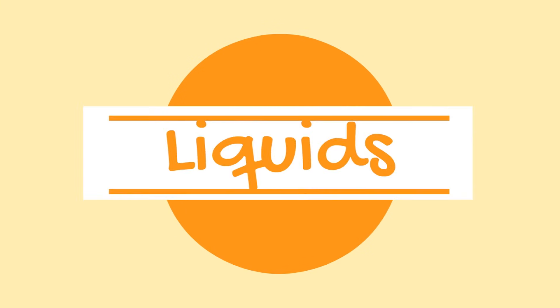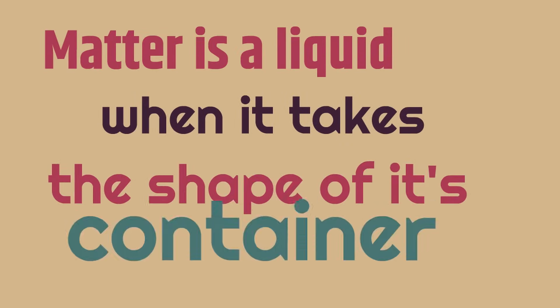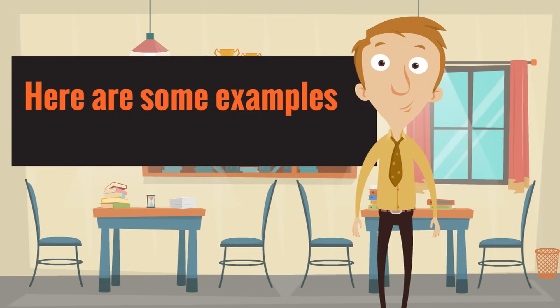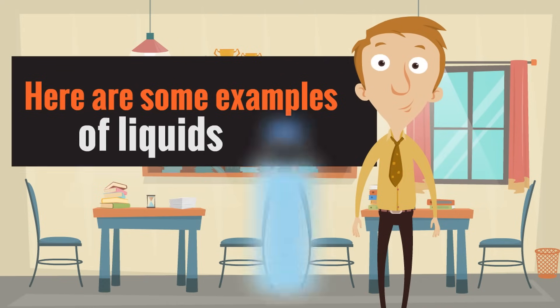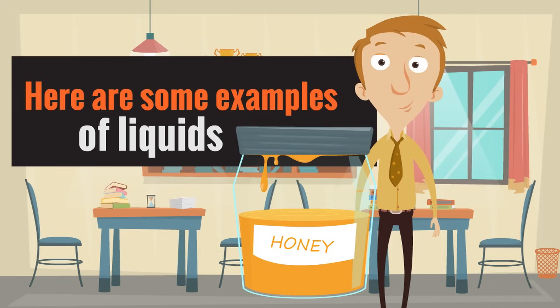Now, let's learn about liquids. Matter is a liquid when it takes the shape of its container. Here are some examples of liquids. Our first is water. Notice how we had to have it in a bottle in this picture because it doesn't have its own shape — it takes the shape of its container because water is a liquid. Here's another liquid: honey. Honey takes the shape of its container. It's not solid, it's liquid.